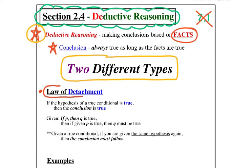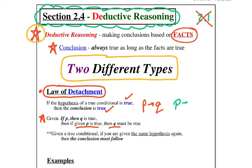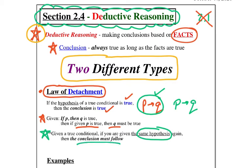Here's the Law of Detachment. It gives you one true conditional, and if that conditional is true, the conclusion should be true. For example, if 'if p then q' is true, and I give you an example of the hypothesis p, you can say that q must also be true. So if p then q is true, and I give you a version of p, you can give me the conclusion q, and it will also be true.